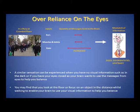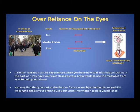A similar sensation can be experienced when you have no visual information, such as in the dark or if you have your eyes closed. You may also find that you look at the floor or focus on an object in the distance whilst walking to enable your brain to use your visual information to help you balance.